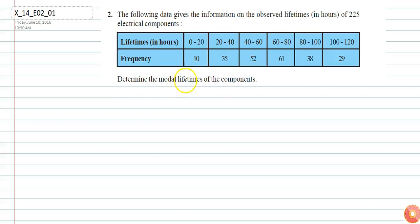The model lifetime of the component is the mode of the given data. The mode of any observation is given by L plus f1 minus f0, divided by 2f1 minus f0 minus f2, times h. I will explain all the terms one by one.